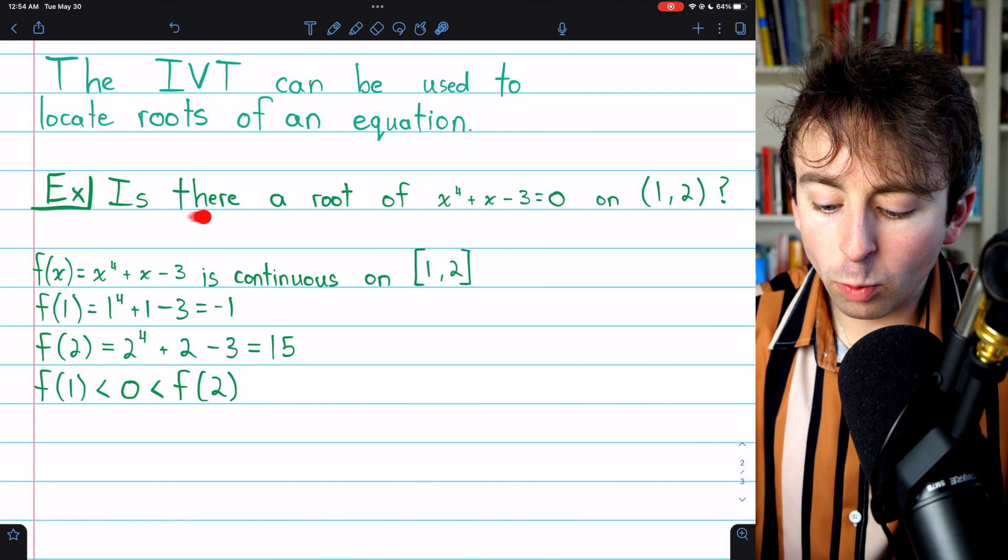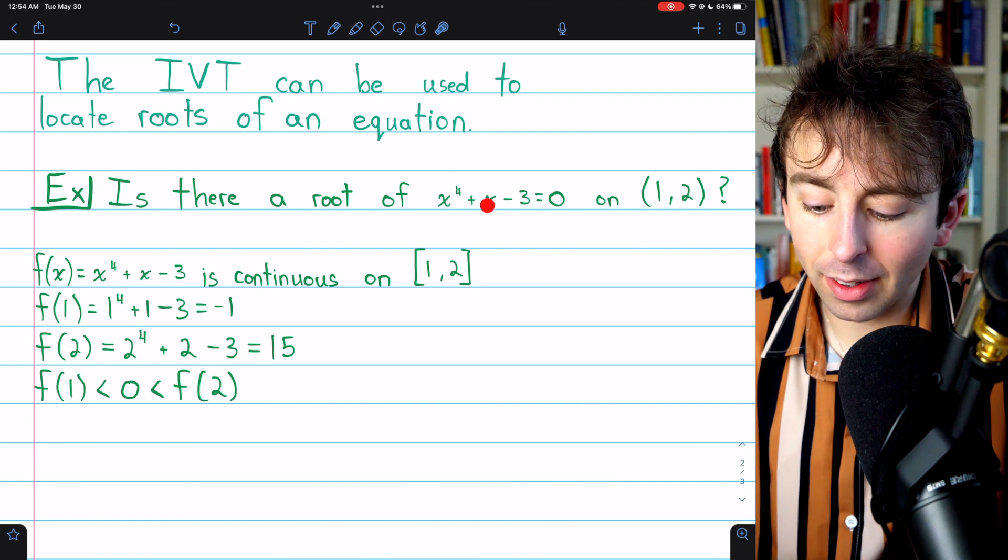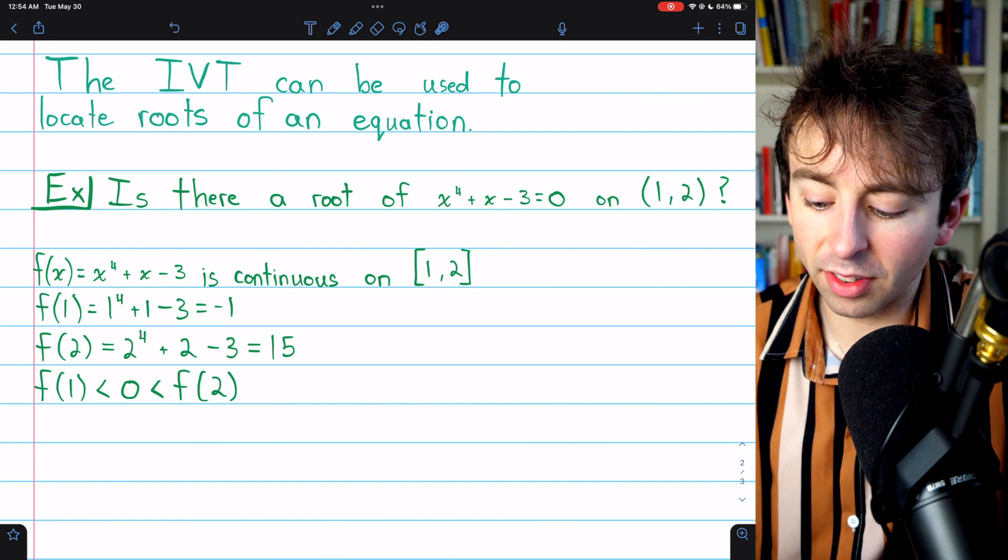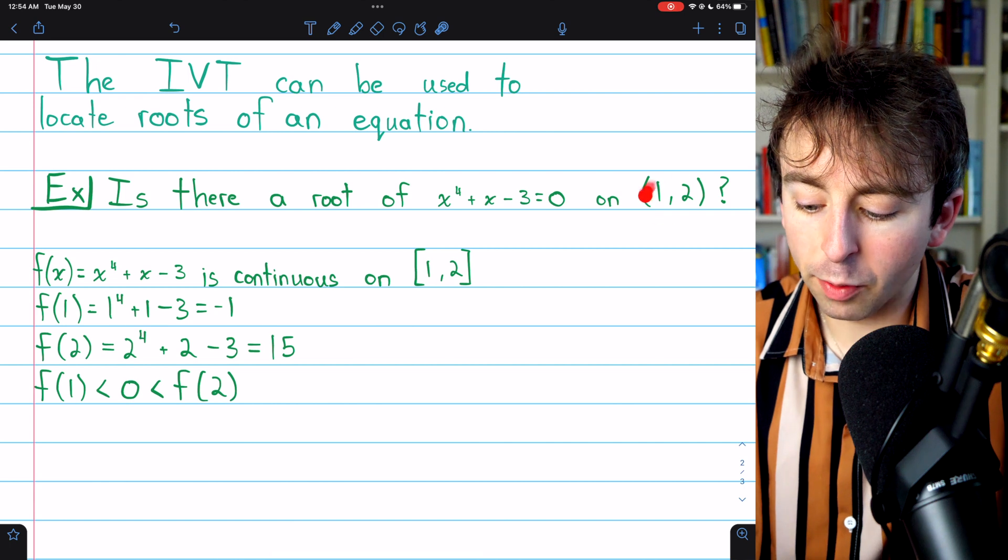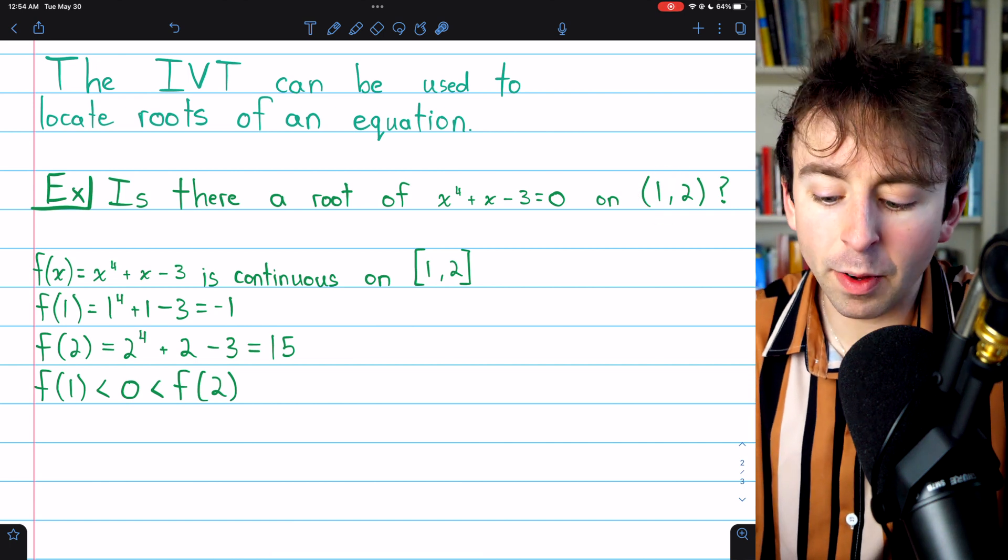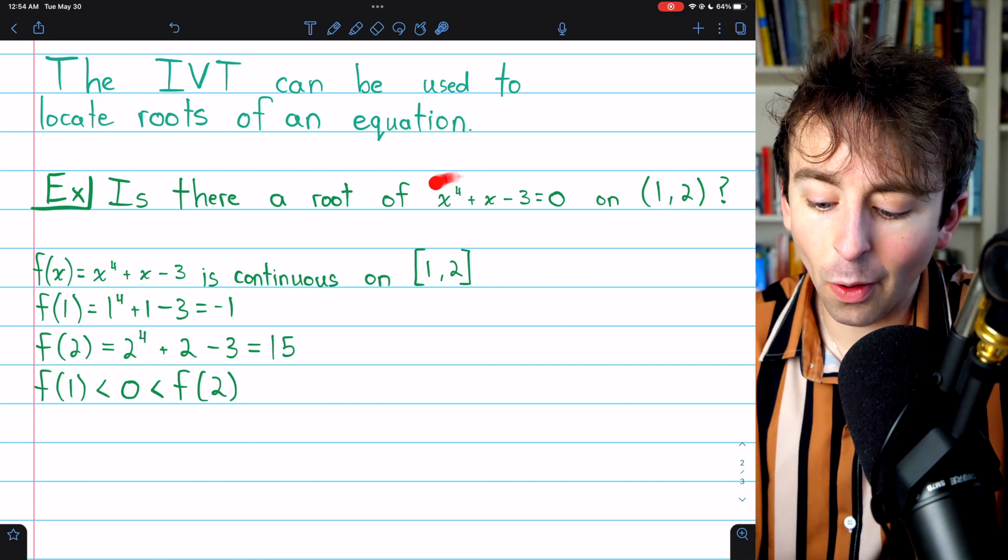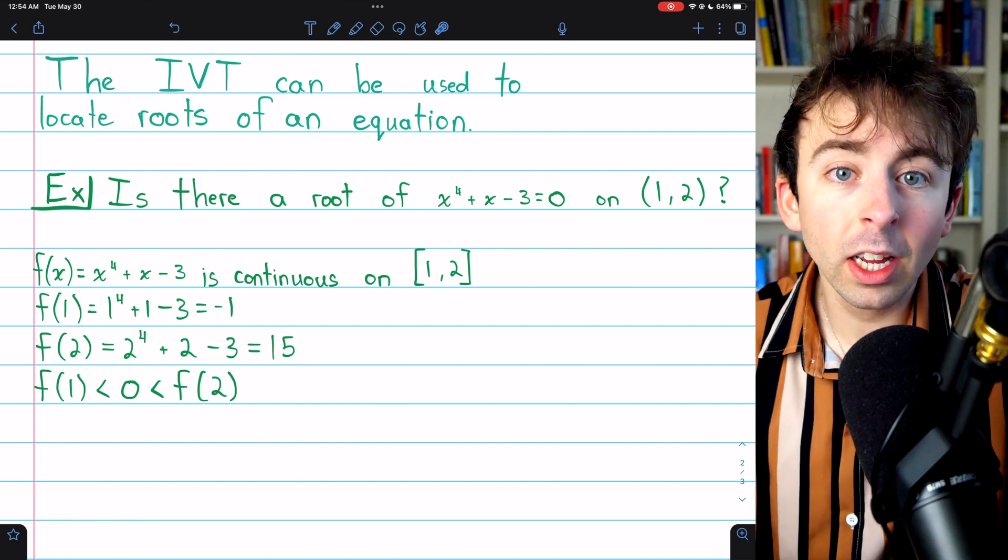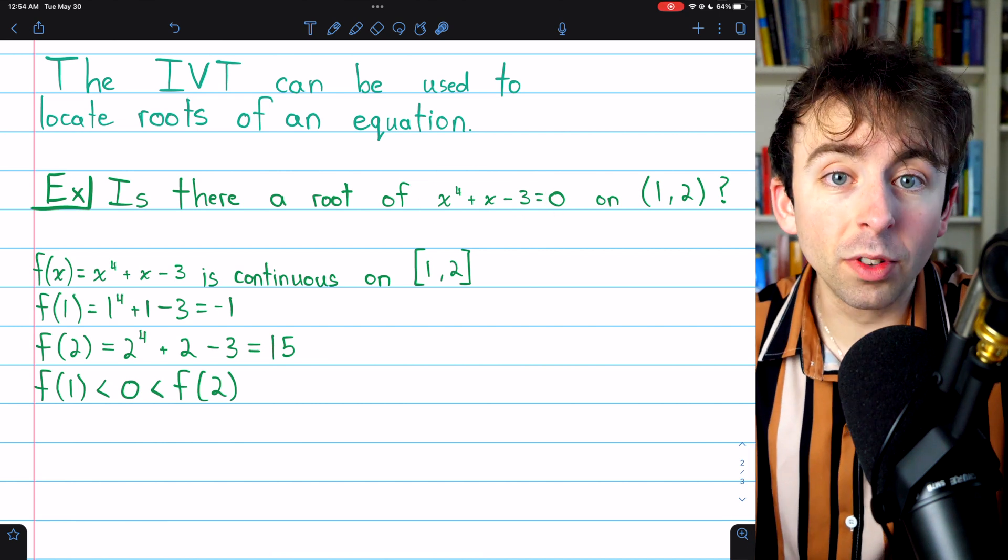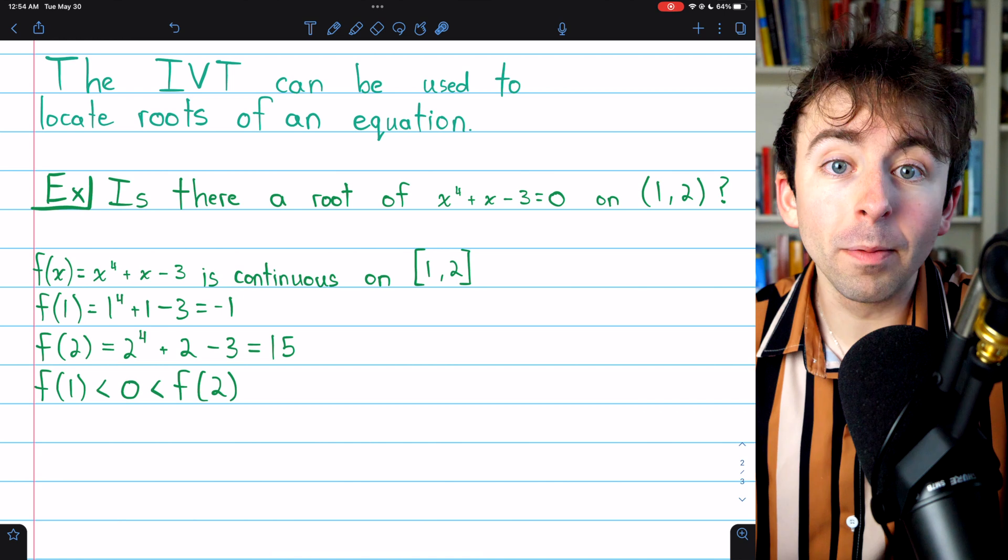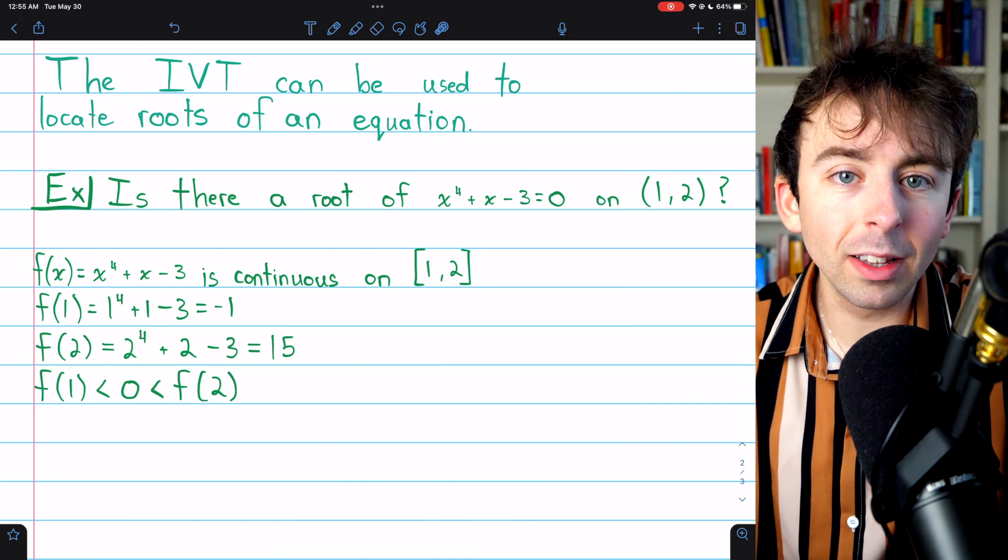Here's an example. Is there a root of x^4 + x - 3 = 0 on the open interval (1,2)? Is there any value of x on this interval that's going to satisfy this equation? We can answer this question using the intermediate value theorem, but in order to draw any conclusions, we, of course, have to verify that the IVT applies on this interval.